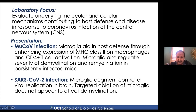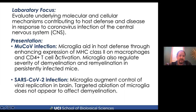What we found is that microglia are very important in enhancing host defense by regulating MHC class 2, which is an important antigen-presenting molecule, specifically on macrophages. This subsequently allows for efficient CD4 T cell activation. In addition, we discovered that microglia are important in regulating the severity of demyelination as well as remyelination in animals persistently infected with mouse coronaviruses. These studies informed our subsequent work in the laboratory.